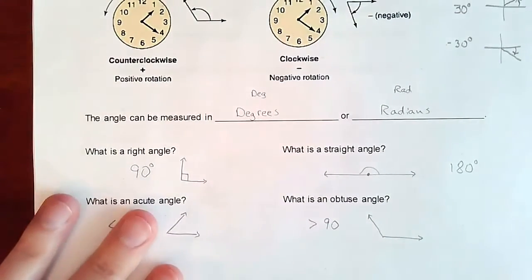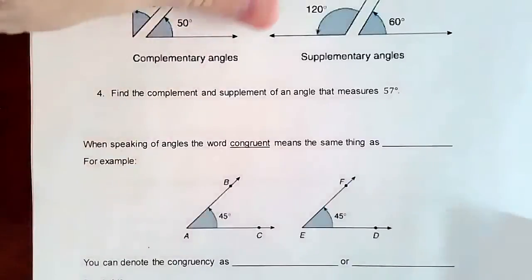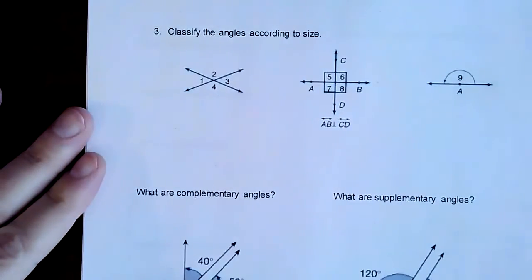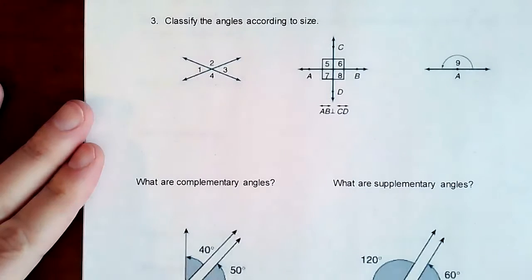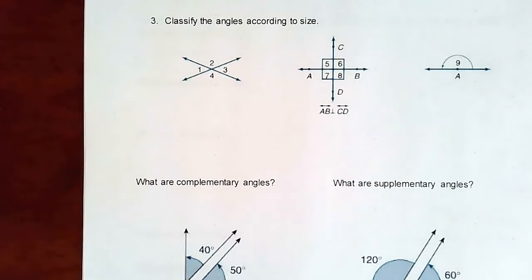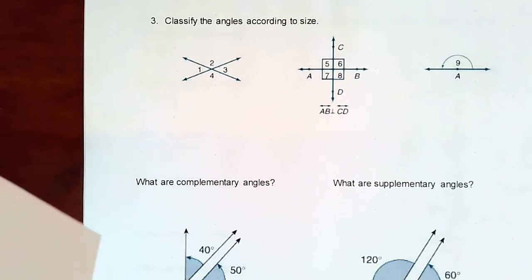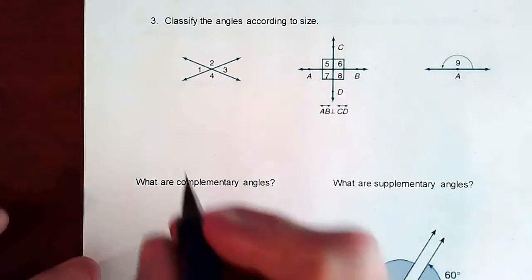Okay, so those are just some names that kind of get thrown out periodically from time to time. A couple of little pieces to this is we're going to classify the angles according to size. So just a couple examples of what are obtuse, what are acute, all that.